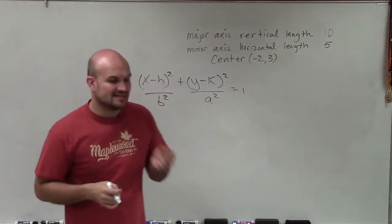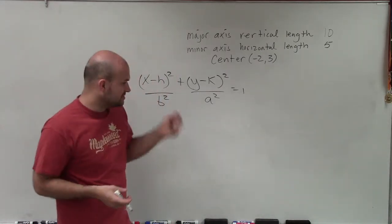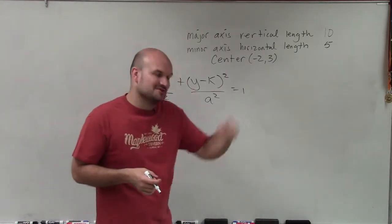Remember, A represents the distance from the center to the vertices, to both of the vertices, but just the distance from the center to one of the vertices.